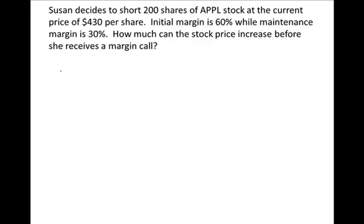Susan decides to short 200 shares of Apple at $430 a share. When she first opens this position, she puts up 60% initial margin. If the stock price increases by a certain amount, she'll experience a decrease in equity to the point where her equity falls below 30% and she'll receive a margin call. It is a little weird because she's short — a stock price increase will lead to a margin call for her, which is different from a long position, where a stock price decrease leads to a margin call.